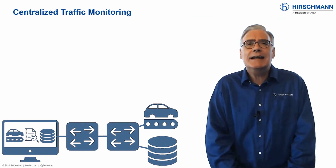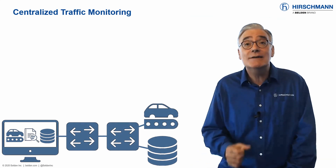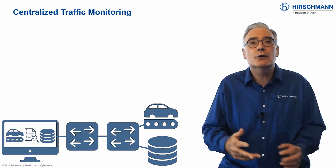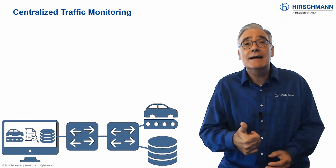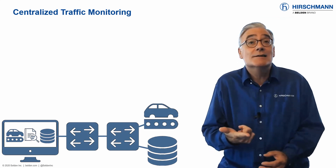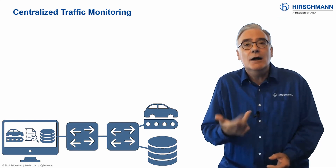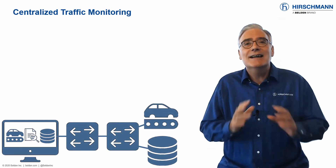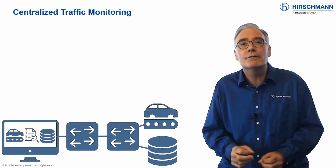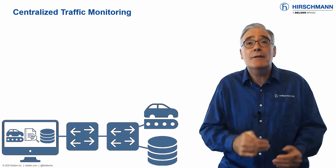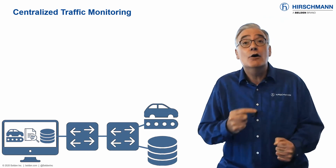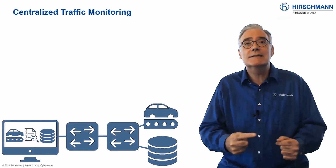Changes in network traffic patterns are a good indicator that something is amiss on your network. New devices appear. Devices which have never talked to each other before start communicating. Traffic loads increase. These are typical symptoms that you need to be aware of. Switches offer two methods of centrally collecting and analyzing data from remote parts of a network.